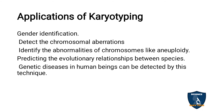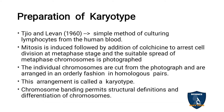Now we will see the preparation of karyotyping. TGO and Levin in 1960 described the simple method of culturing lymphocytes from human blood. Mitosis is induced, followed by the addition of colchicine to arrest cell division at the metaphase stage, and a suitable spread of metaphase chromosomes is photographed. The individual chromosomes are cut from the photograph and arranged in an orderly fashion in homologous pairs. This arrangement is called a karyotype.